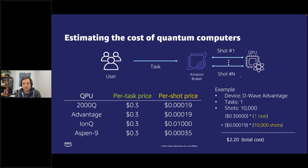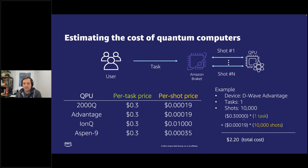For example, if you wanted to submit a single task with 10,000 shots to the D-Wave Advantage quantum annealer, the example on the right of your screen takes you through the calculations. We calculate it by the 30 cents upfront per-task cost and the $0.00019 per-shot cost times 10,000 shots, giving us a total cost of $2.20.